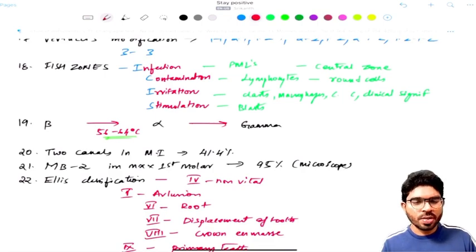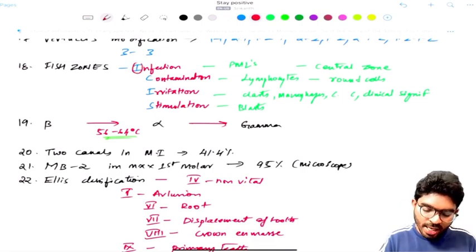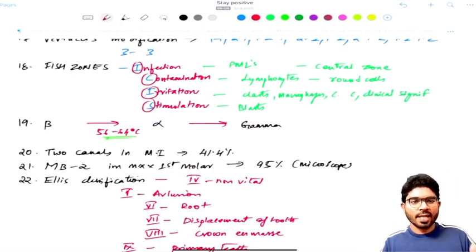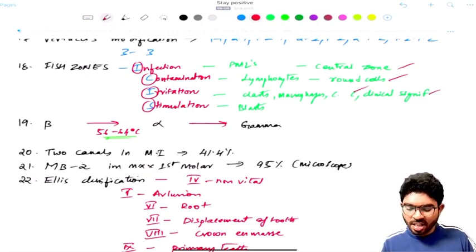You need to make a note about the Fish zones that you can remember with ICIS. I for infection, C for contamination, I for irritation, S for stimulation. And I hope you remember all these diagrams which I have discussed vigorously when we are taking the regular classes. And the predominant cells in the case of infection zone are polymorphonuclear leukocytes and it is center zone. And contamination, you have more lymphocytes or you can ask round cells are more predominant in contamination zone. Irritation zone, you have clasts, macrophages, and it is clinically more significant. And cholesterol crystals are also seen. This is clinically more significant zone - irritation zone.